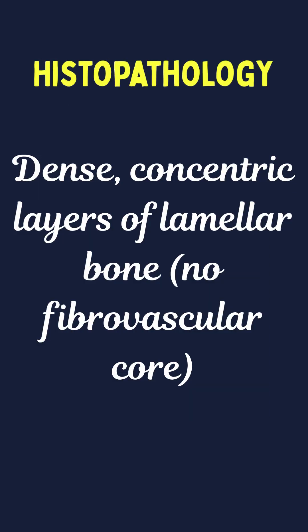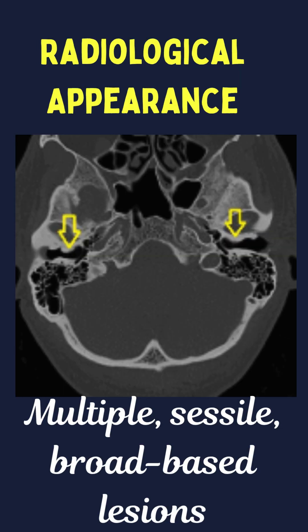Histopathology shows dense concentric layers of lamellar bone without fibrovascular channels. HRCT of the temporal bone is very typical, showing bilateral sessile masses.